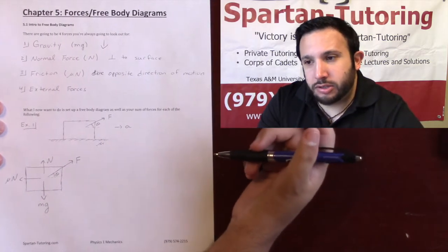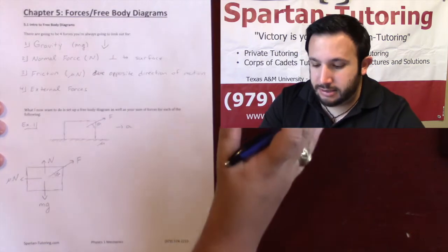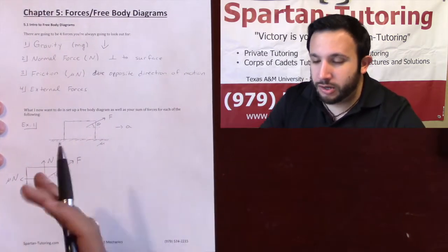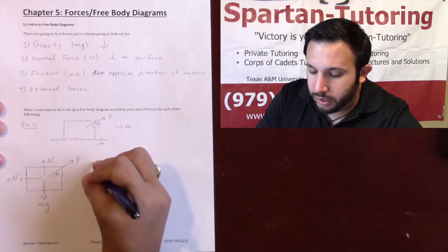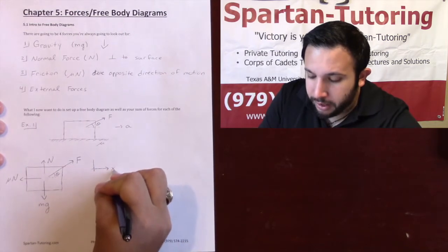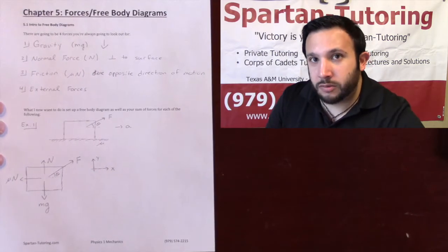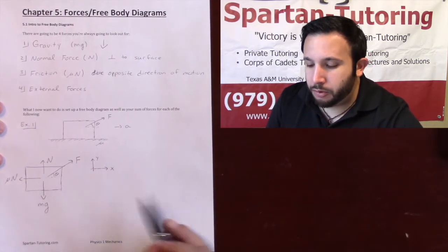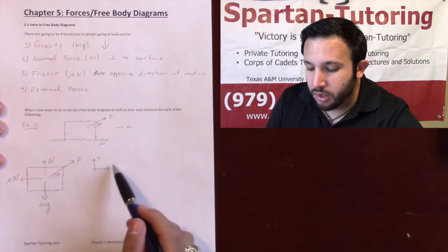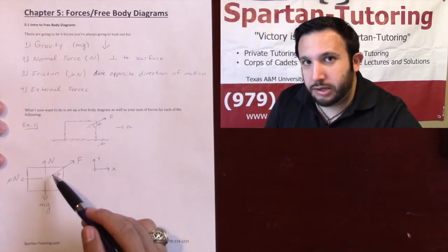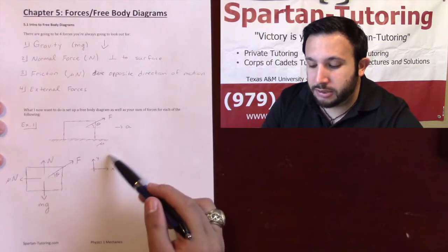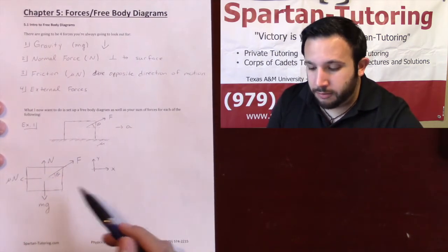Once you have your free body diagram set up, you need to determine the best axis. I set the positive x-direction in the direction of motion and acceleration — so positive x is directly to the right and positive y is straight up. Notice that three of my forces are already aligned with this axis, so I only need to do geometry for the one angled force F.